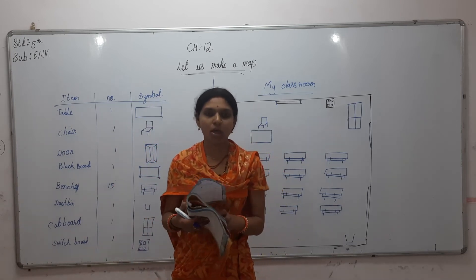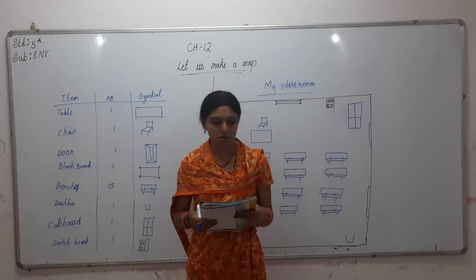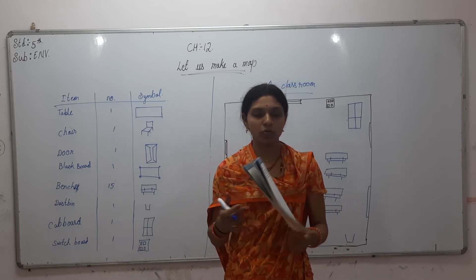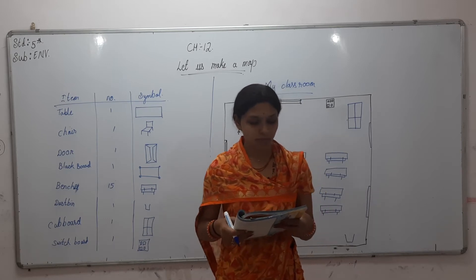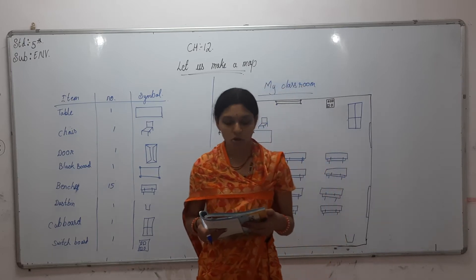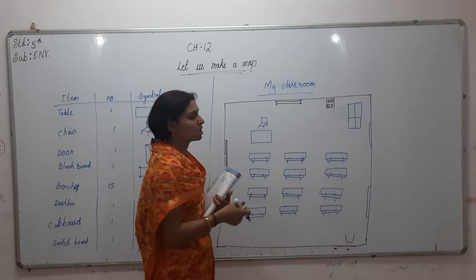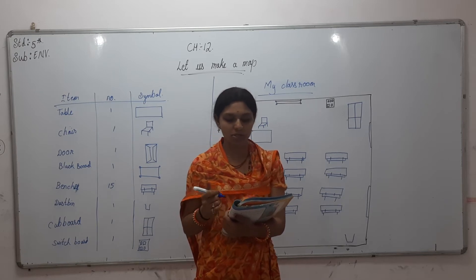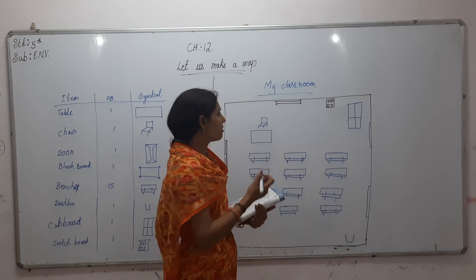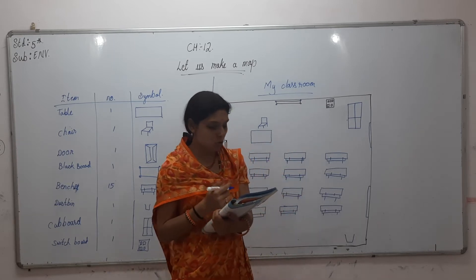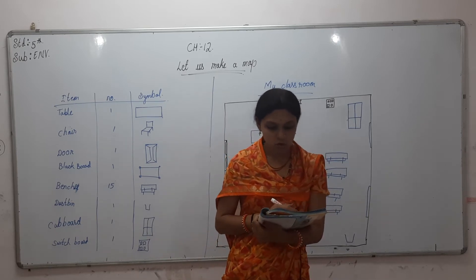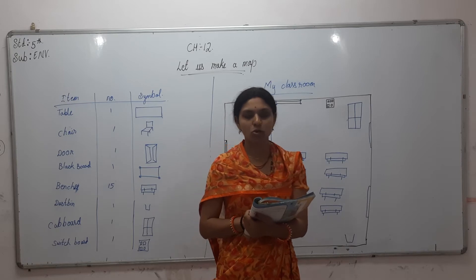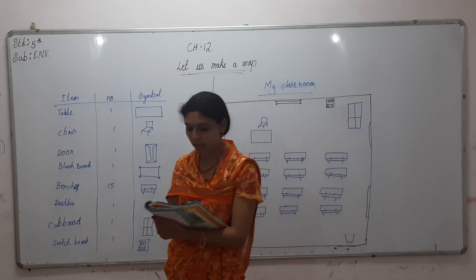Now turn the page. Let the square below represent the classroom — here one square is given and you have to represent the classroom in that square. Show the position of the things of the classroom in the square. If there are two tables, show the symbol of tables at a specific place. Wherever there are benches, show them using the symbol. Give symbols to other things also and show them as per their position.